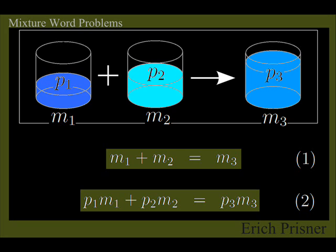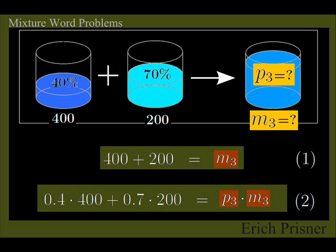Let's now return to our mixture word problems, where M1 mg of an acid solution of concentration P1 and M2 mg of an acid solution of concentration P2 are poured together to obtain M3 mg of an acid solution of concentration P3. In the first version we discussed, M1, M2, P1 and P2 were given and M3 and P3 were unknown. They were our variables.